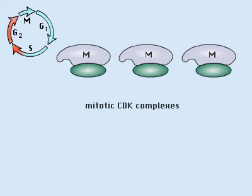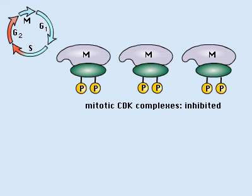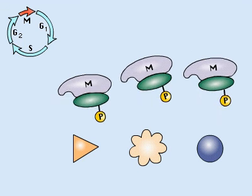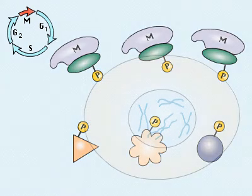Mitotic CDK complexes are made during S-phase and G2, but their activities are inhibited until DNA synthesis is complete. Activation of mitotic CDK complexes begins M-phase. These CDKs phosphorylate multiple substrates, resulting in the first steps of mitosis.